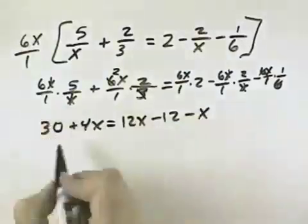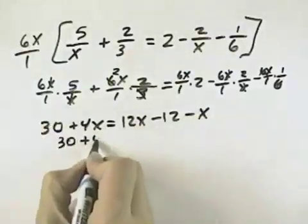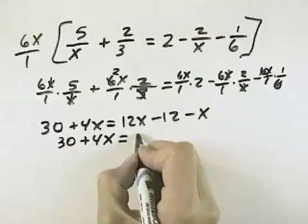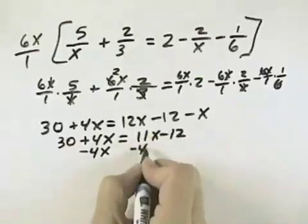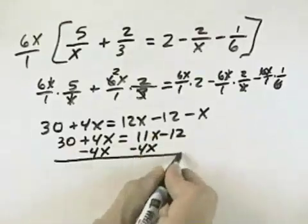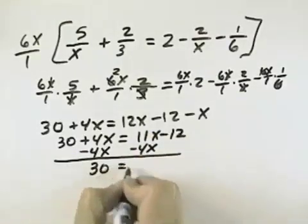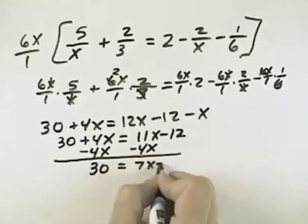Simplifying this now, we have 30 plus 4x, and on the right we can subtract 1x to have 11x minus 12. I'm going to subtract 4x from both sides to get all the x's on the right. And I'm left with 30 equals 7x minus 12.